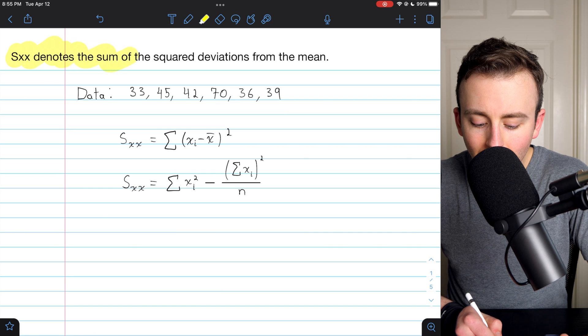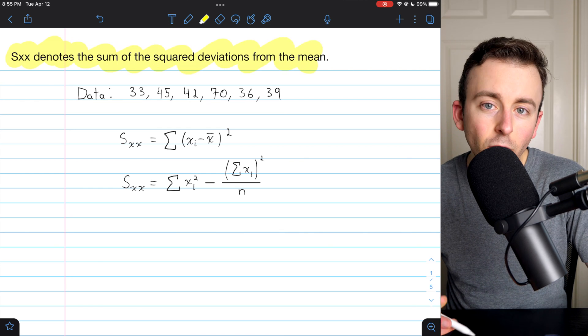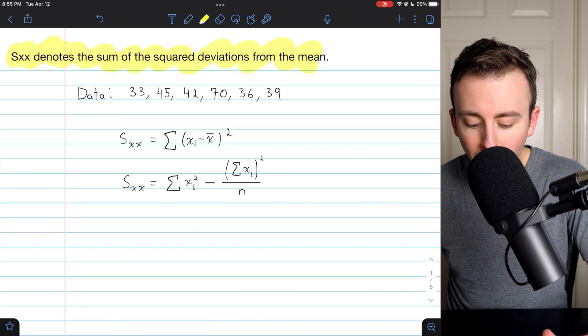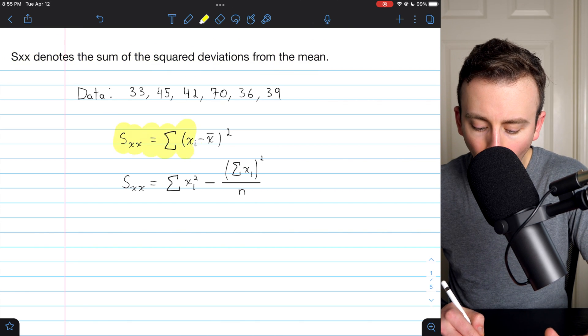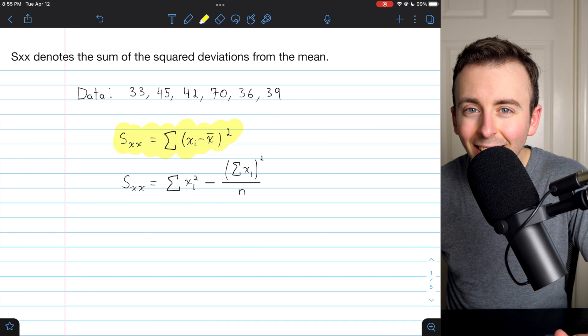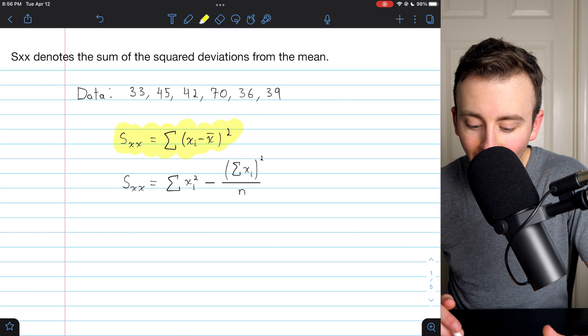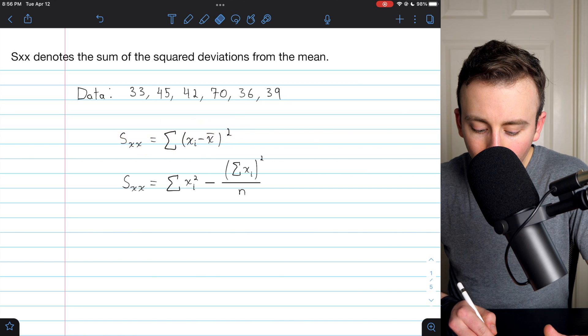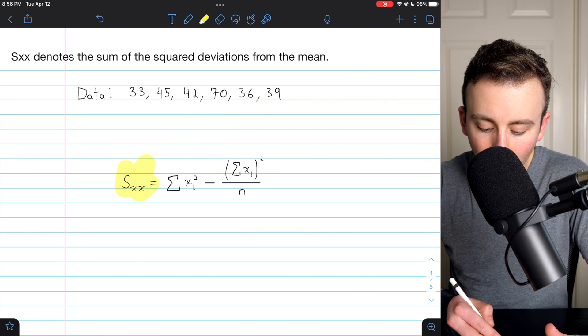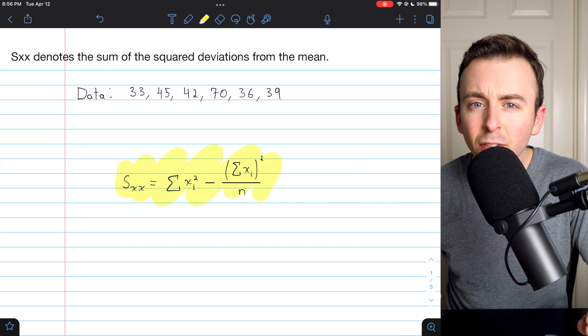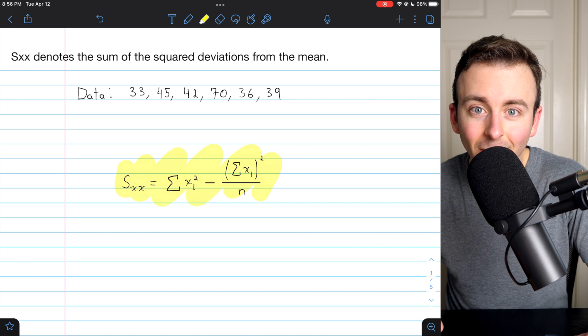SXX simply denotes the sum of the square deviations from the mean for a set of data, and this simple explanation gives way to this formula, but this formula is actually not super easy to use, and certainly not with a calculator. Thankfully, there's this other sort of shortcut formula, which is exactly the same, believe it or not, and this is much easier to use with a calculator.